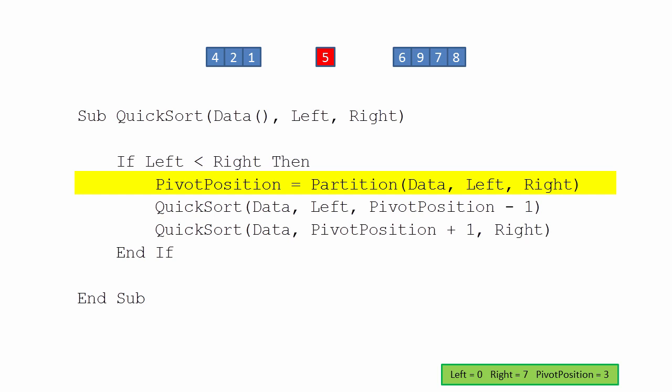The Partition function not only partitions the list, but also returns the resting position of the pivot value, which is now in the correct place. The resting position of the pivot can be used to determine the upper bound of the sublist on the left-hand side and the lower bound of the sublist on the right-hand side.